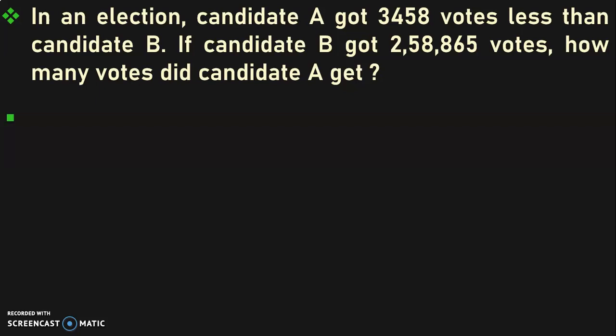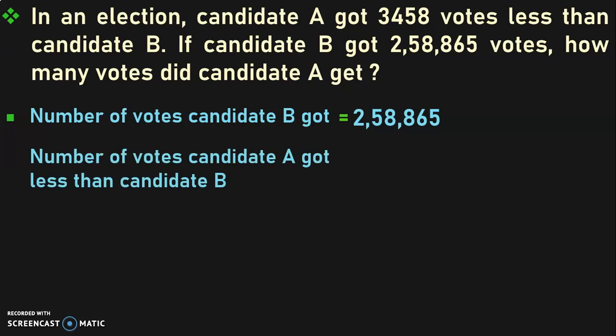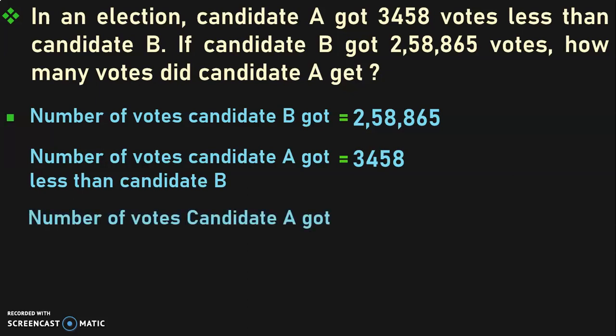The first step is to write down whatever information is available to us. Number of votes candidate B got is equal to 2,58,865. This is the bigger number, so we first write that down. Number of votes candidate A got less than candidate B is 3,458. Now, number of votes candidate A got is equal to 2,58,865 minus 3,458.